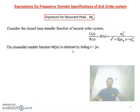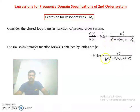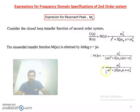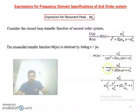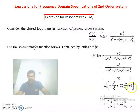If we substitute s = jω, we obtain the sinusoidal transfer function. Here j² = -1, so we get -ω² from the j² term, giving -ω² + j·2ζωn·ω + ωn² in the denominator. Taking ωn² common and simplifying, we separate real and imaginary parts, obtaining M(jω) = 1 / [(1 - (ω/ωn)²) + j·2ζ(ω/ωn)].